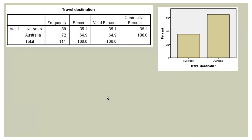We start by using the frequencies procedure to see how the travel variable is distributed. The output shows that 35% of respondents had travelled overseas in the last 12 months. So the proportion in the sample is greater than 0.25, our reference proportion from 2010. But this is just a sample, and the proportion in the population is probably a bit different.